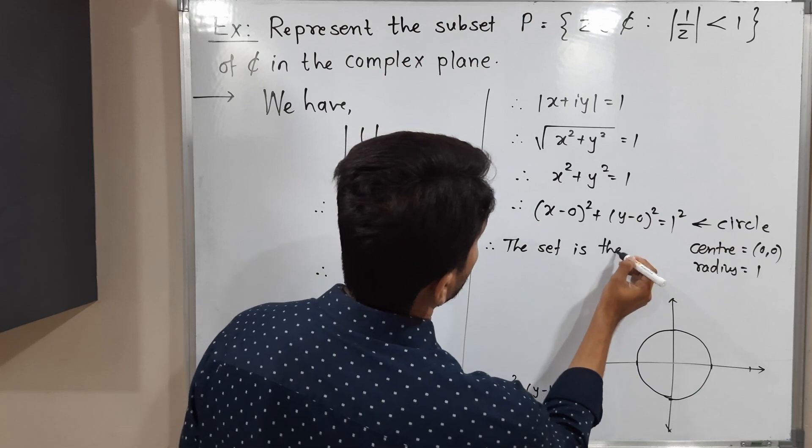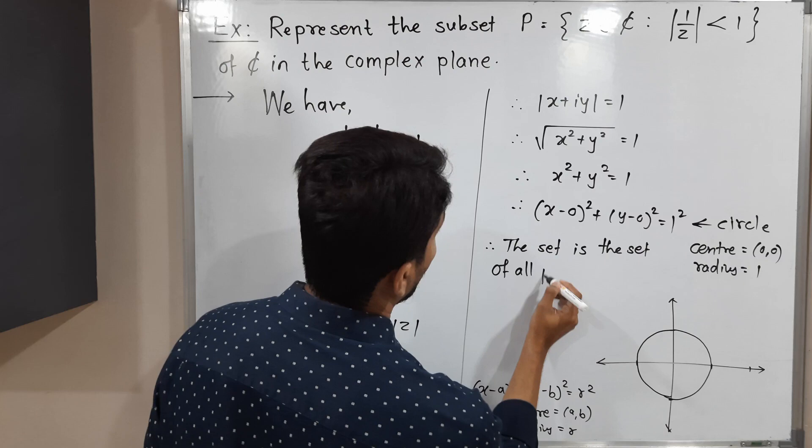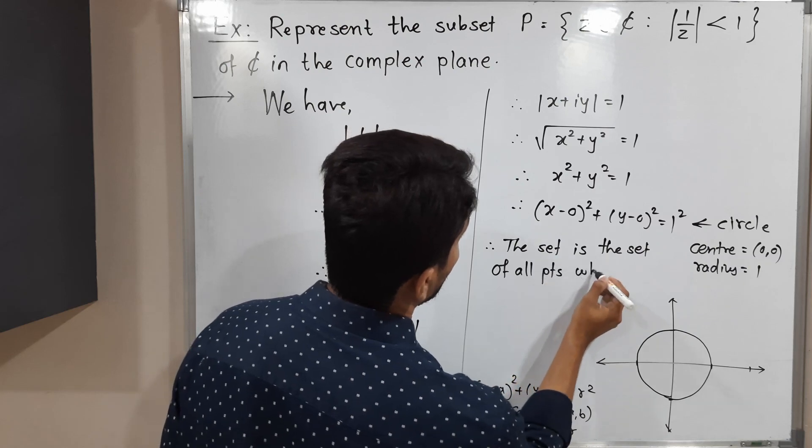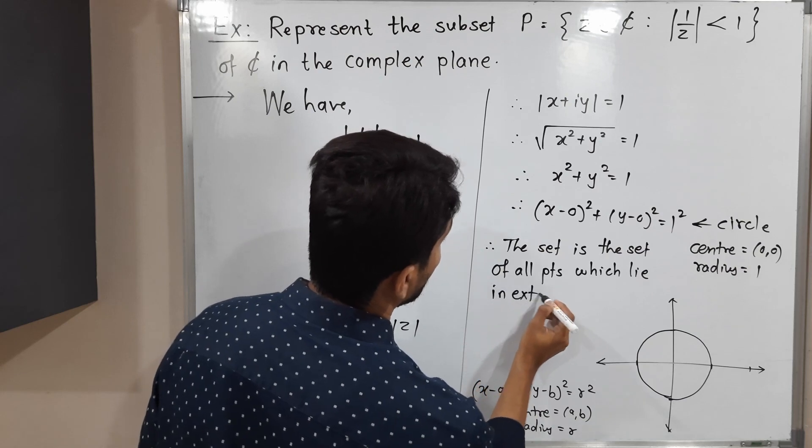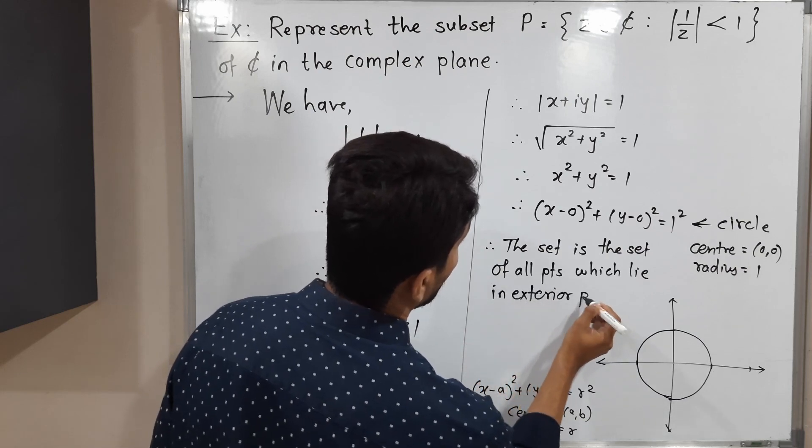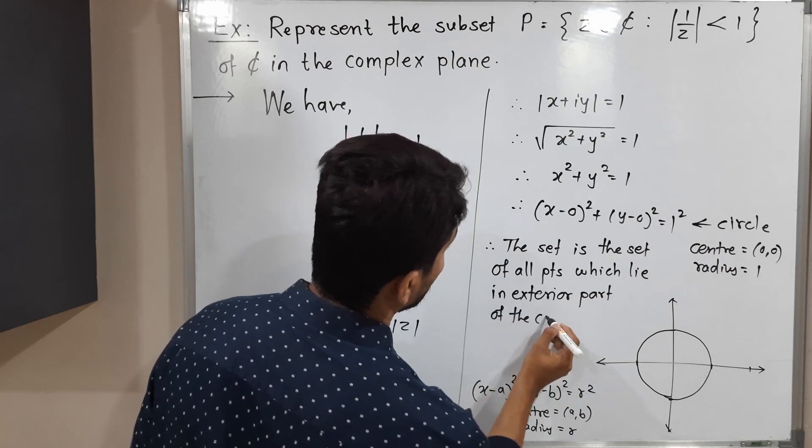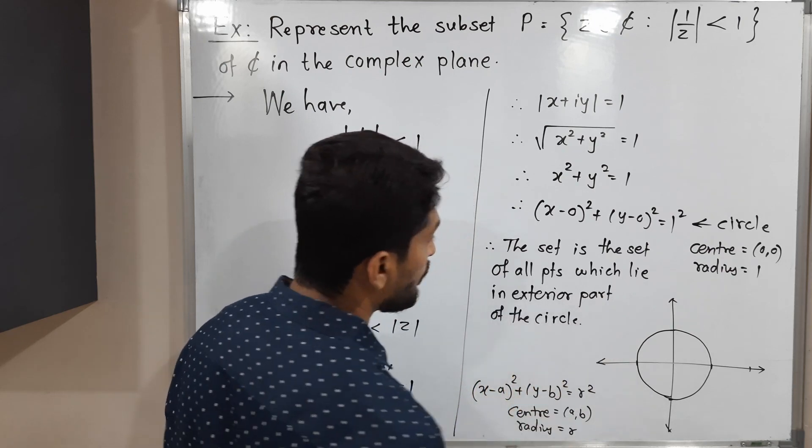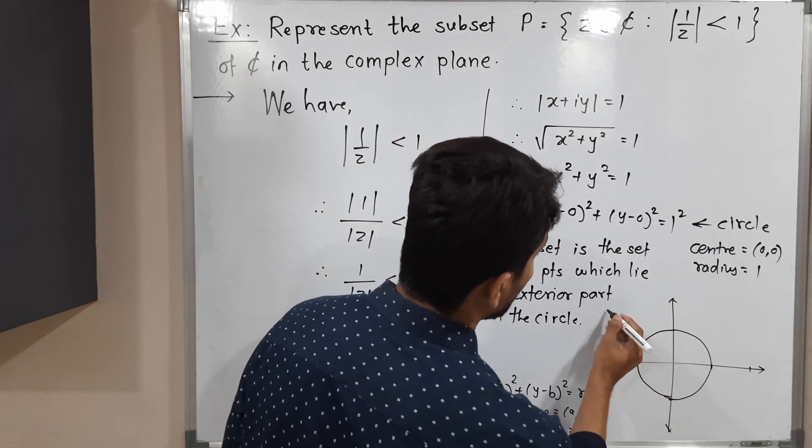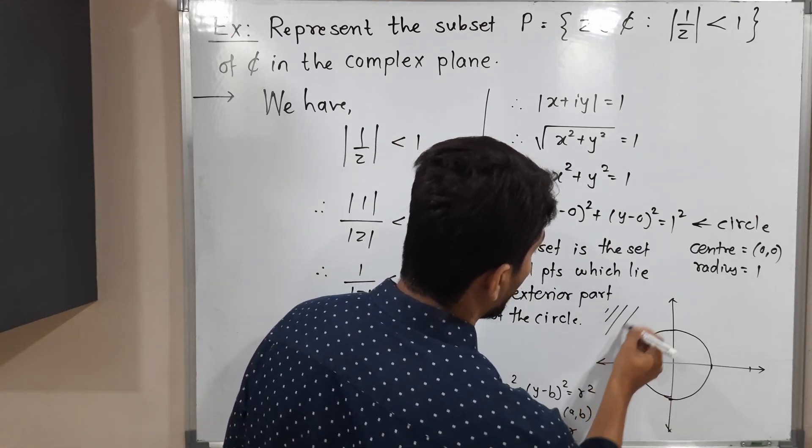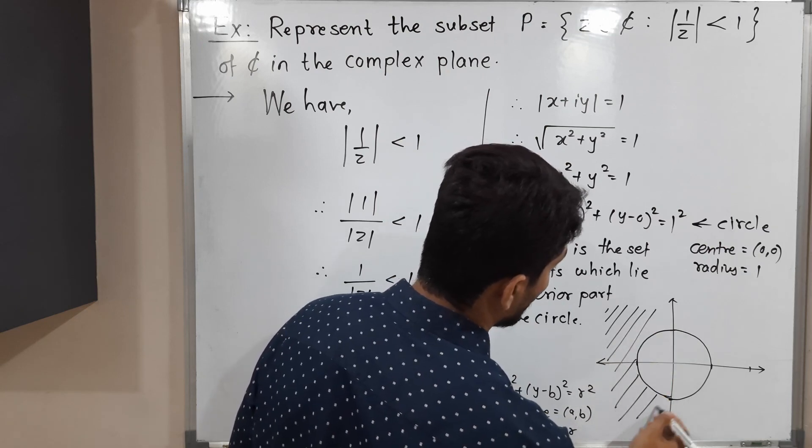Therefore, the set is the set of all points which lie in the exterior part of the circle—that means all points which lie outside the circle. The outer part of the circle, so we should not consider points on the circle or inside.